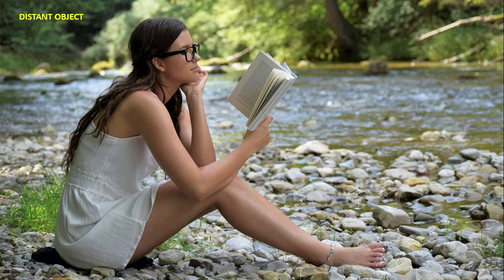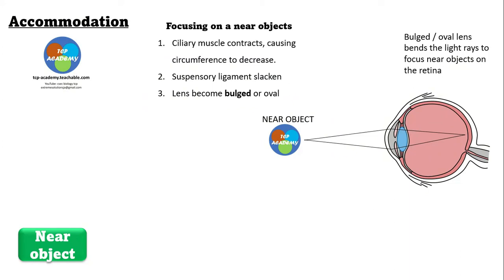Let's look deeper at what actually happens. In focusing on a near object, it all surrounds the cornea and the size and shape of the lens. The ciliary muscle contracts, causing the circumference to decrease. The suspensory ligaments will slacken, and as a result,